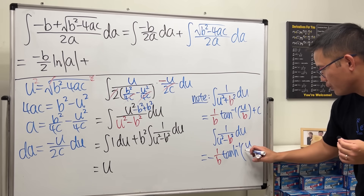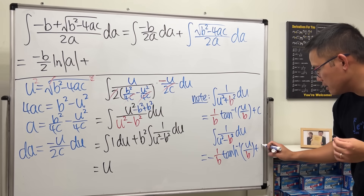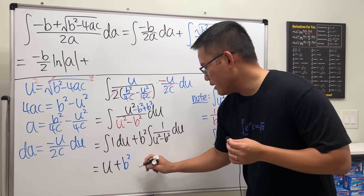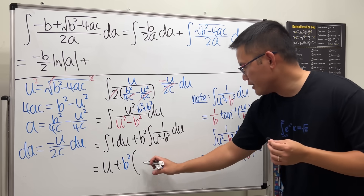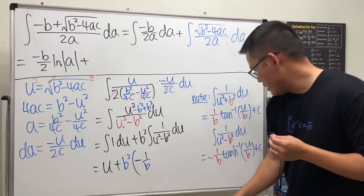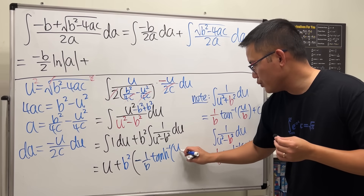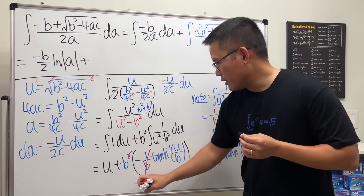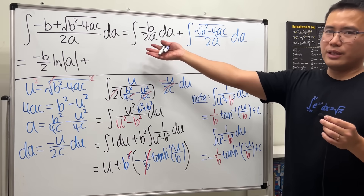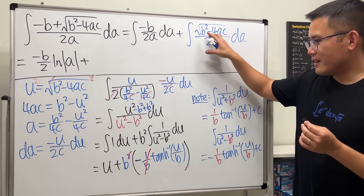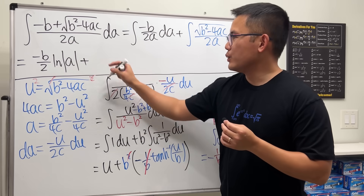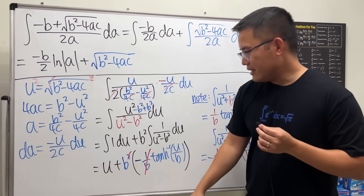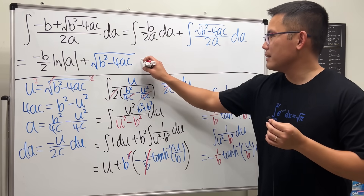Applying that formula: we get u, and then b² times −(1/b) arctanh(u/b), which simplifies to −b · arctanh(u/b). Substituting back u = √(b² − 4ac), the result for the second integral becomes √(b² − 4ac) minus b · arctanh(√(b² − 4ac) / b).